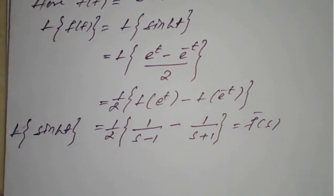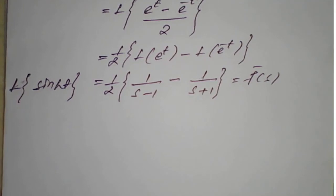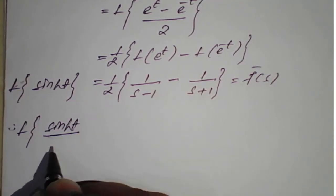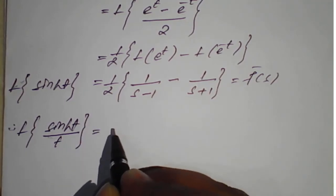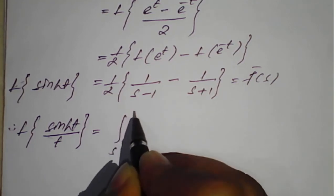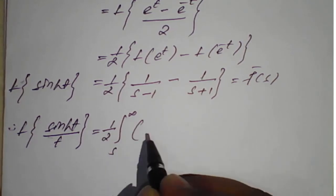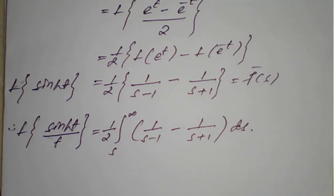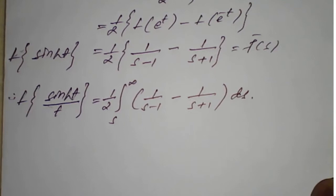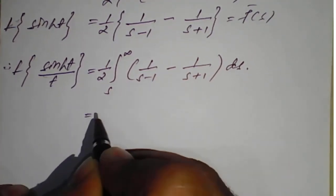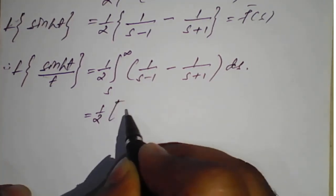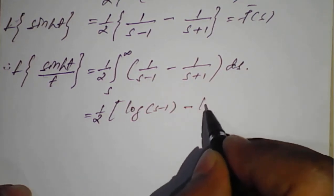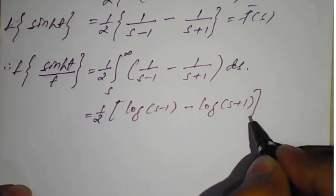Now, as per the question, we need to find the Laplace transform of sinh(t) divided by t. Therefore, applying Property Number 3 directly: Laplace of sinh(t)/t equals (1/2) times the integral from s to infinity of [1/(s−1) − 1/(s+1)] ds.